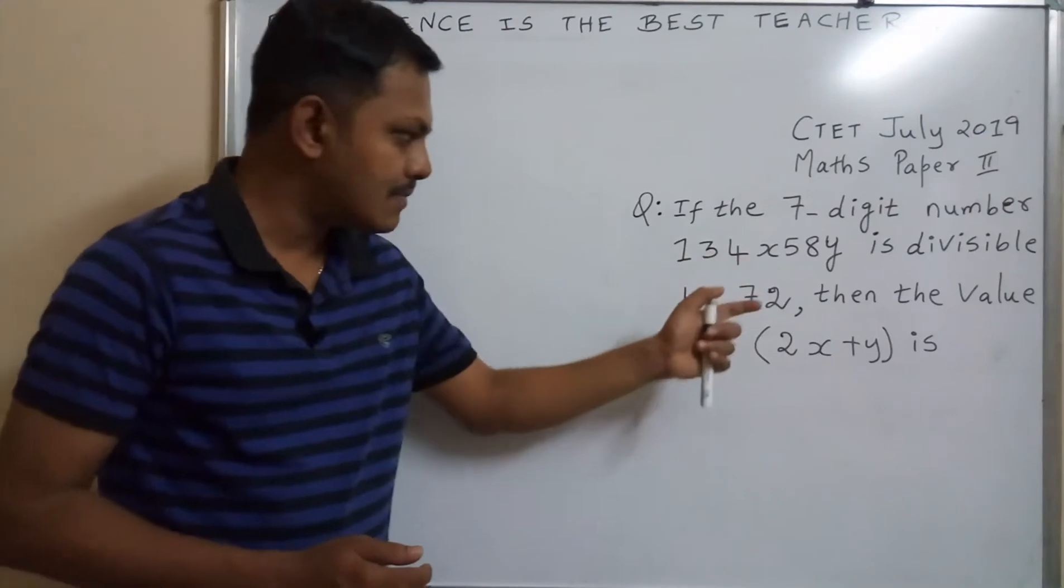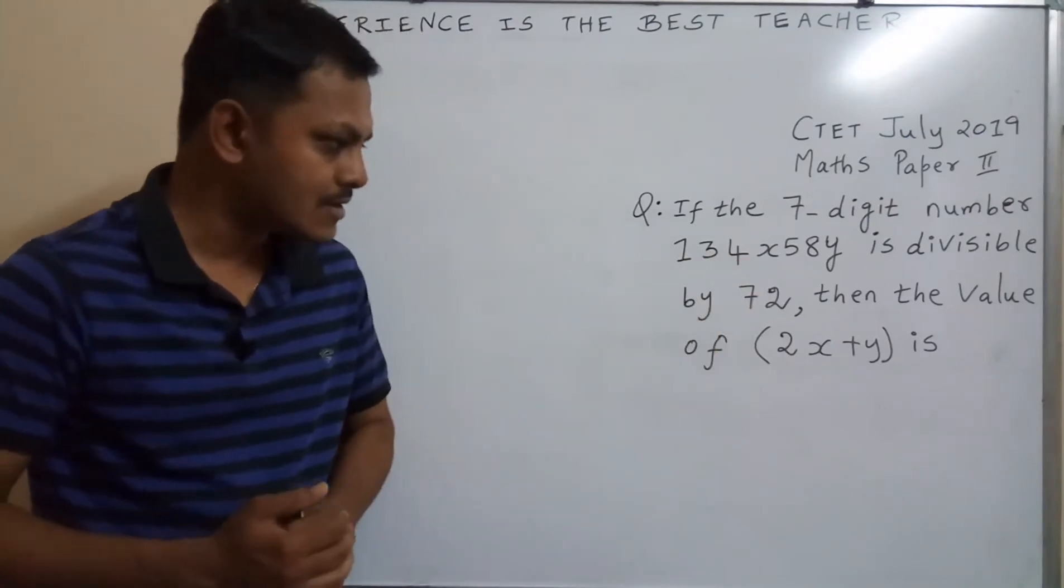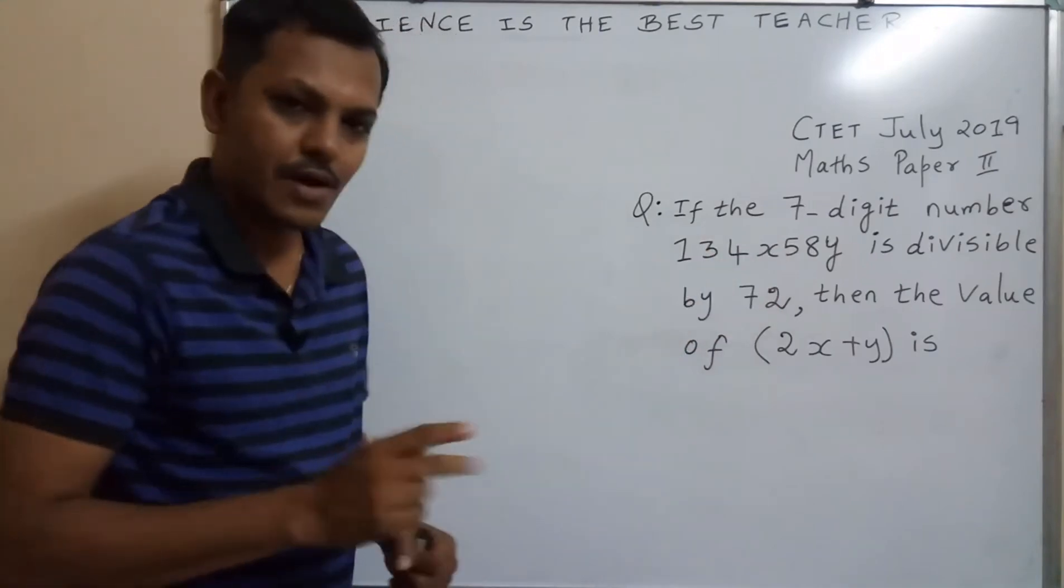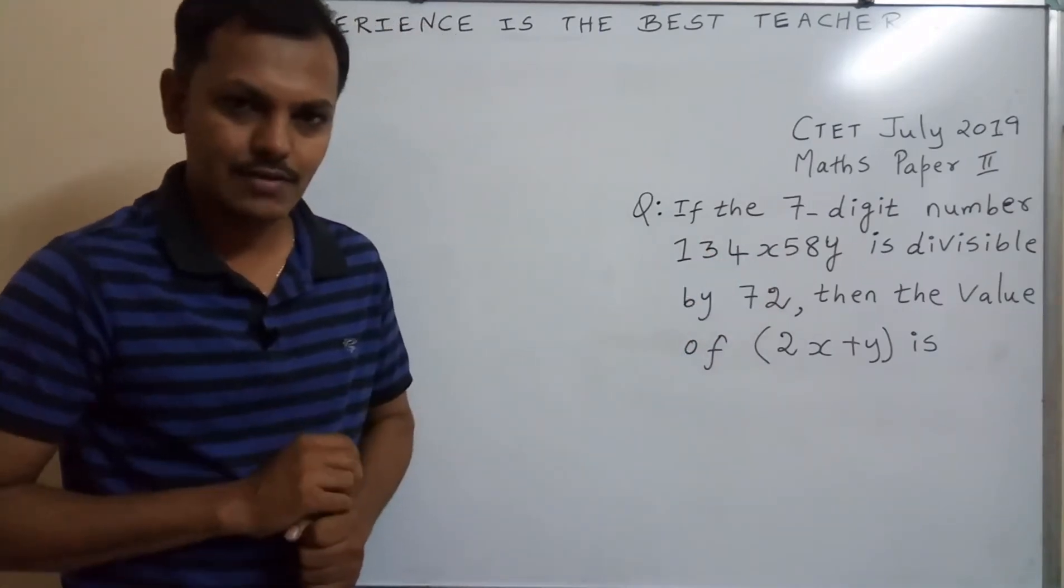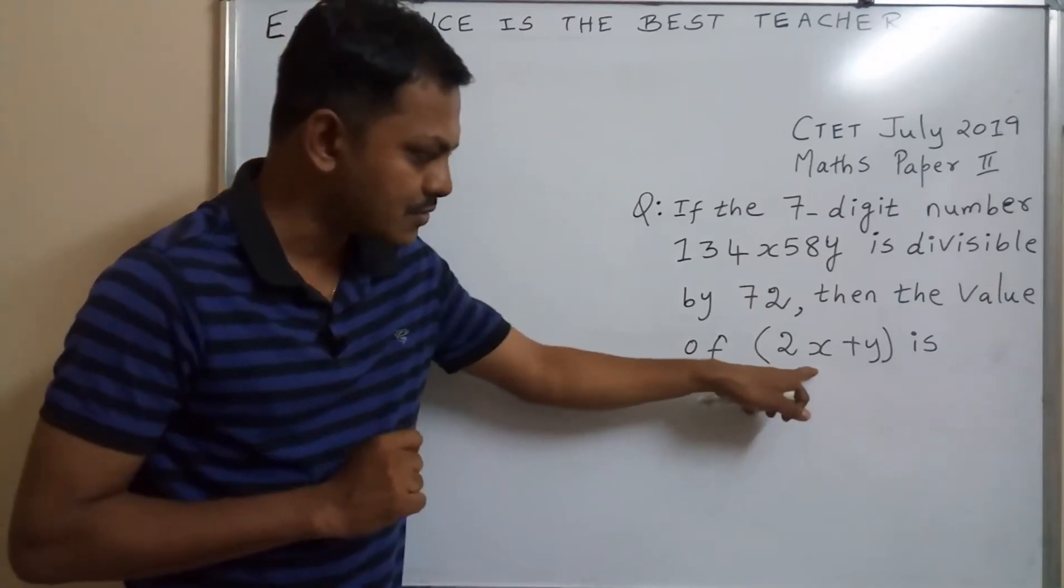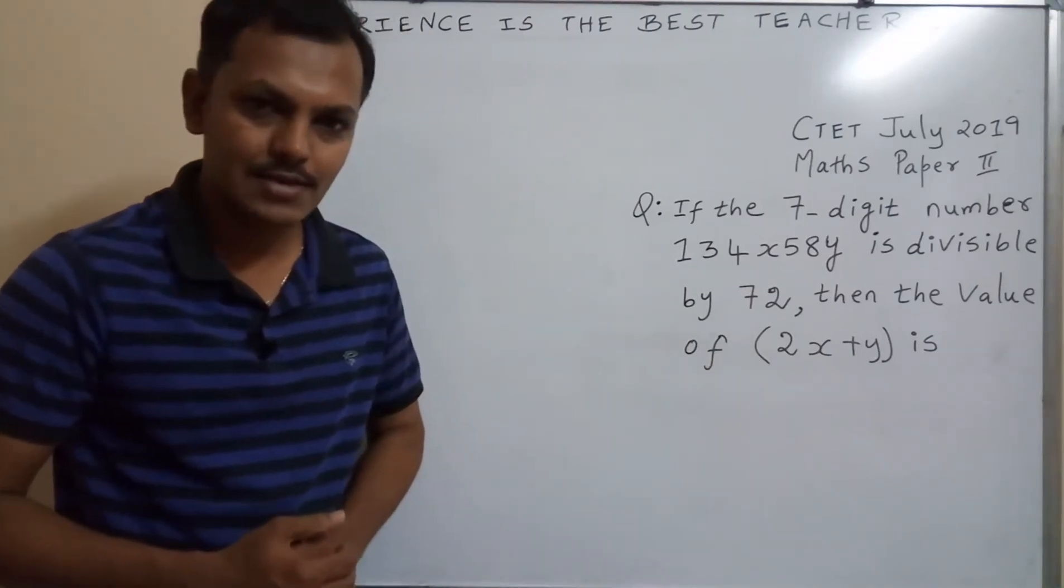This 7-digit number is divisible by 72. Then what is the value of 2x plus y? In this 7-digit number, 2 unknown single digits x and y are given. We need to find out this x, y value. After that, we have to substitute in this. We will find out the answer 2x plus y.